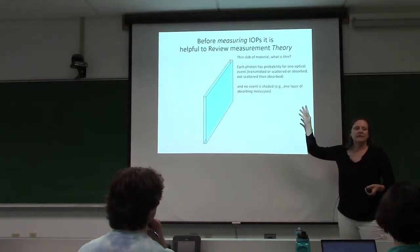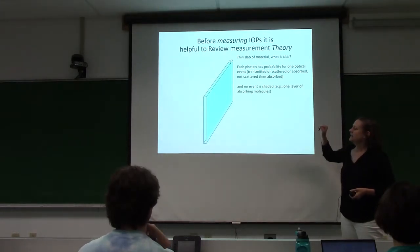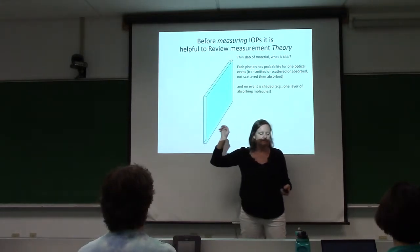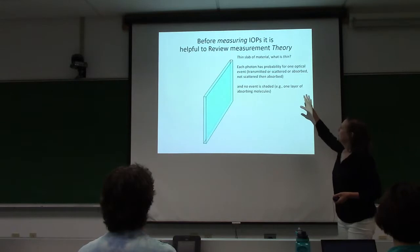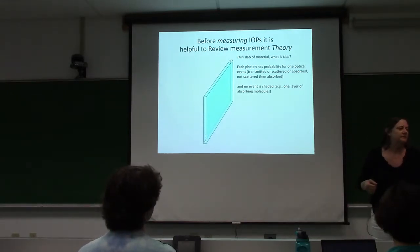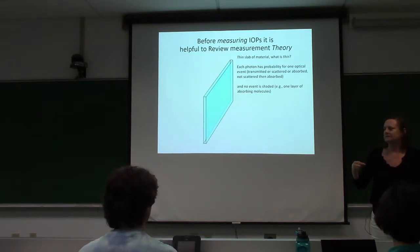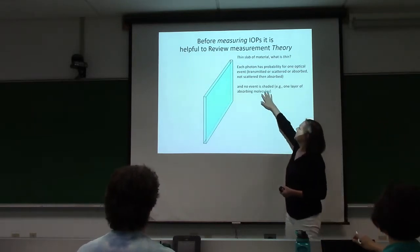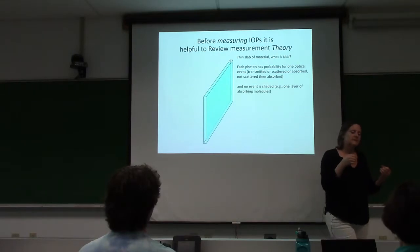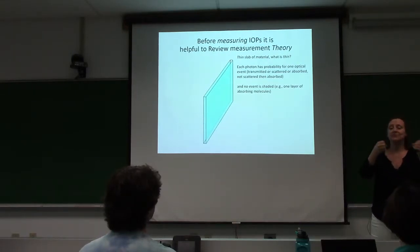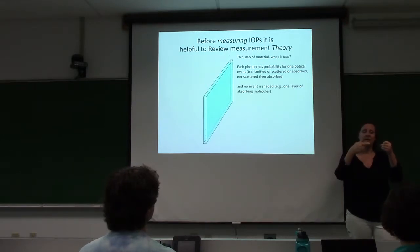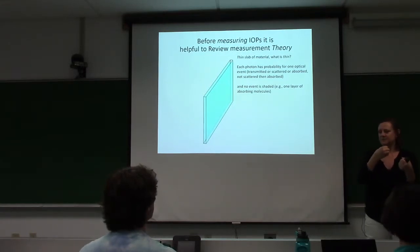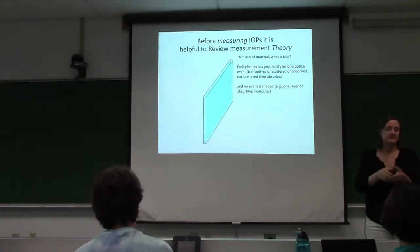What do we mean by thin optically? If we're going to pass some photons through here and measure the loss of those photons, we really want to have a probability that there's one event for that photon - it can either be transmitted, absorbed, or scattered. But it can't be scattered and then absorbed, because that would be two events. You also want it thin enough that no event is shaded from another, so no shading.